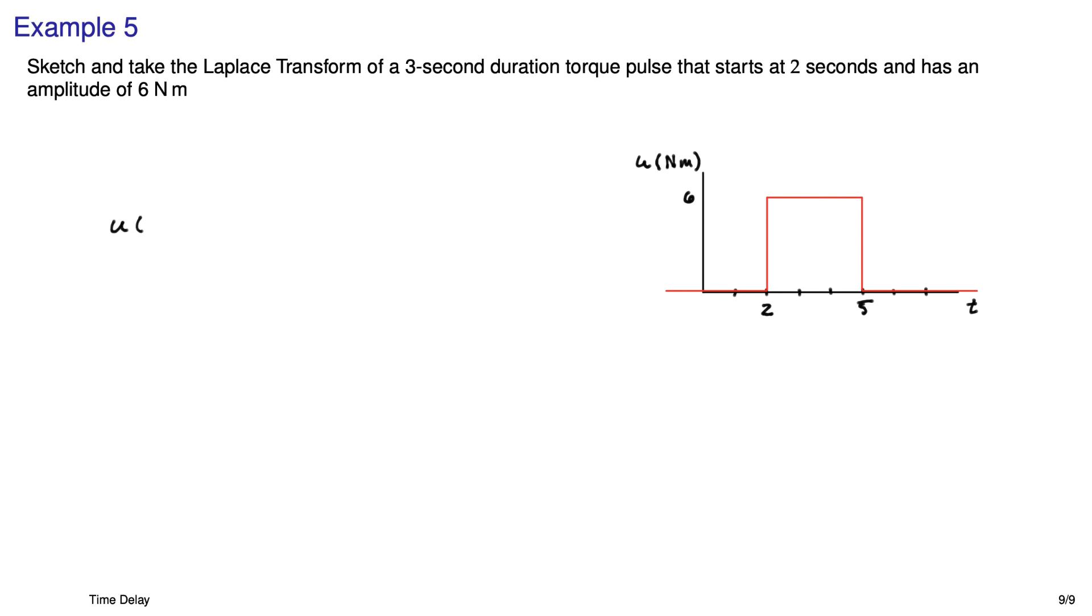And now we just have to write it out mathematically in the time domain. We have a couple of steps. One positive, one negative. Both shifted in time a little bit. And so then we can write out the Laplace transform of it. And I can reorganize that a little bit and I get this.